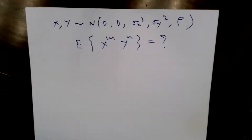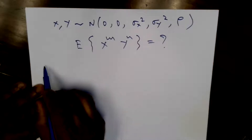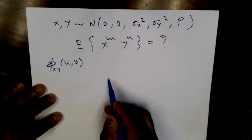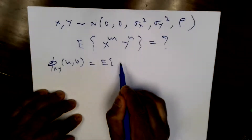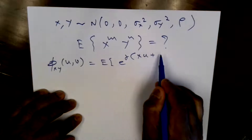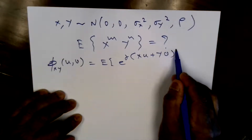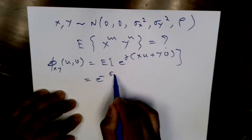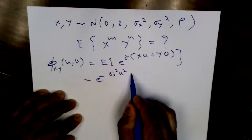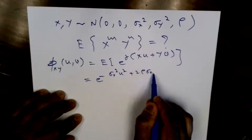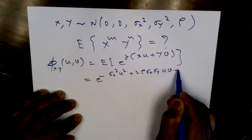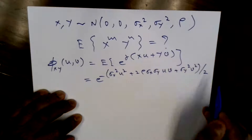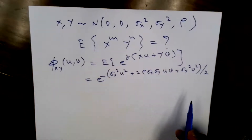We can get a closed-form expression and we'll use the characteristic function — this is the easiest approach and also an application of the characteristic function. By definition, the characteristic function is E[e^(j(xu + yv))]. Using the standard form for jointly Gaussian variables, this equals e^(−(σx²u² + 2ρσxσy·uv + σy²v²)/2). This is a standard result you can look up anywhere.